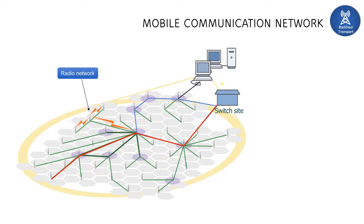The first one is the radio network. Radio network is the dominant network in the mobile communication world, and through this network only a user or a mobile device can communicate with the mobile networks or to the core networks. It consists of a base station, which is actually a transceiver. Then comes the traffic network — it grooms the traffic from every base station and sends it to the switch site or to the management network.